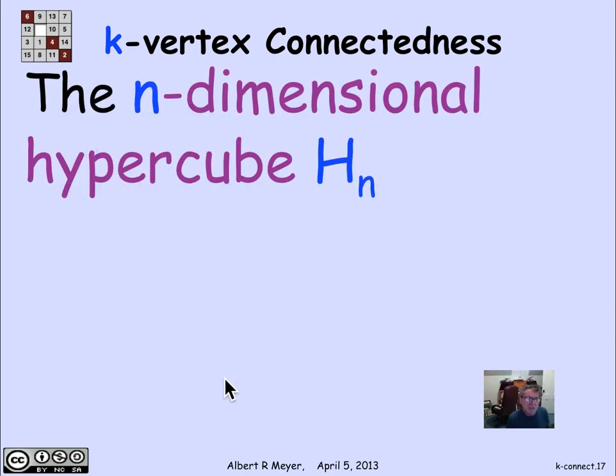Another interesting structure is the n-dimensional hypercube. The square is 2-dimensional and the cube, the ordinary cube is the H_3, has 8 vertices and looks like a cube.